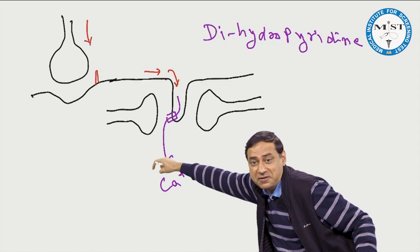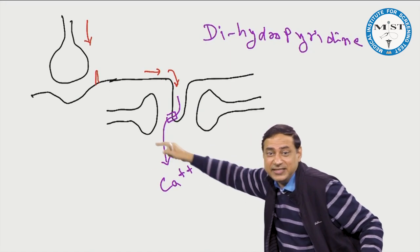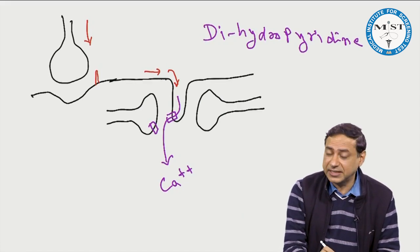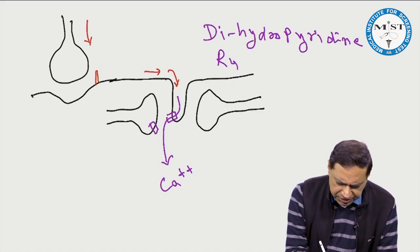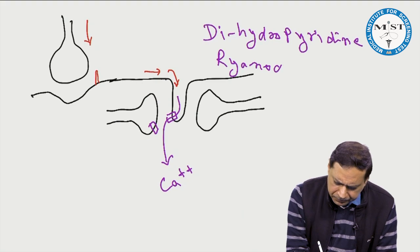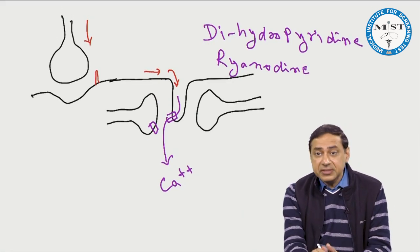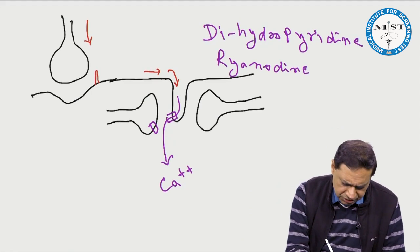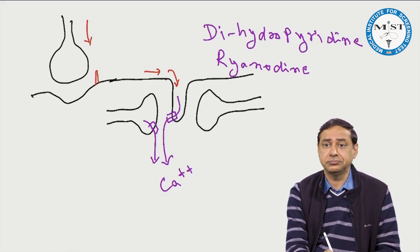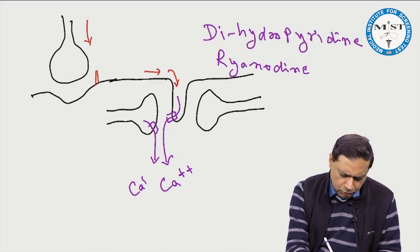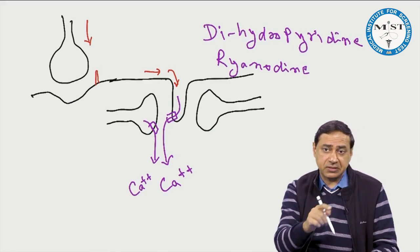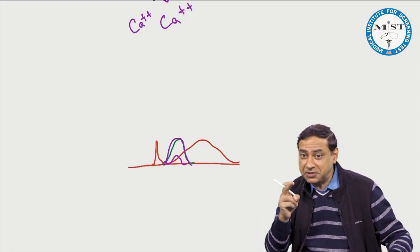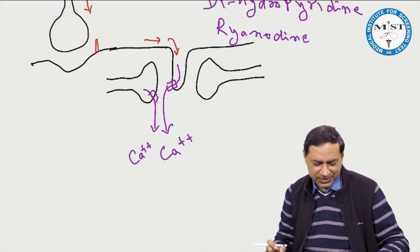The actual source of calcium is the cistern. Until and unless calcium comes from the cistern, the muscle will not contract. There is a calcium channel in the cistern known as the ryanodine receptor. This calcium channel is activated, and calcium starts coming from this source — the actual large amount of calcium because of which the muscle contracts.